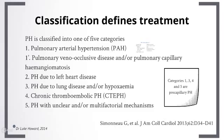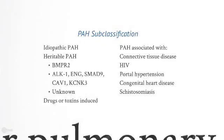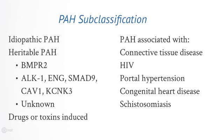The first category is pulmonary arterial hypertension. This can be further subclassified into idiopathic pulmonary arterial hypertension, heritable, and also due to drugs or toxins. It can also be associated with a number of different conditions, for example connective tissue disease, HIV, portal hypertension, congenital heart disease, and schistosomiasis.